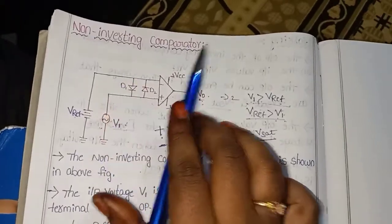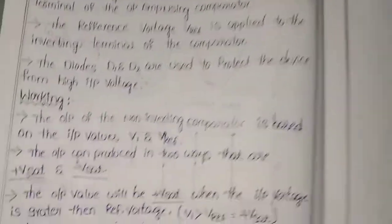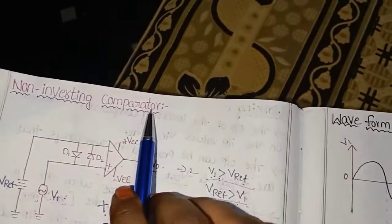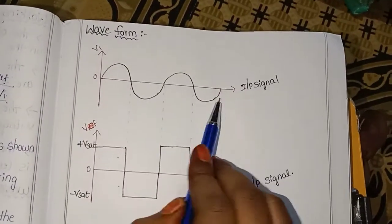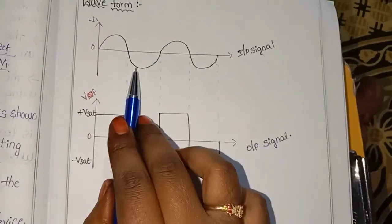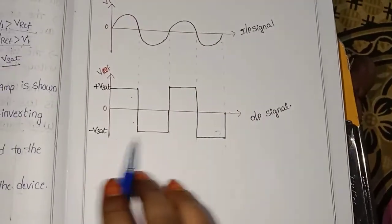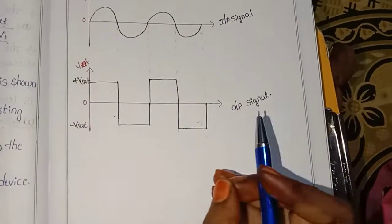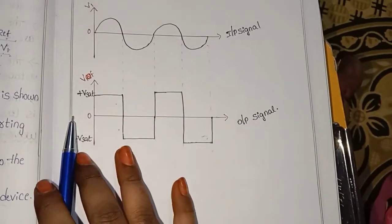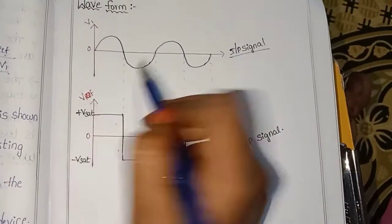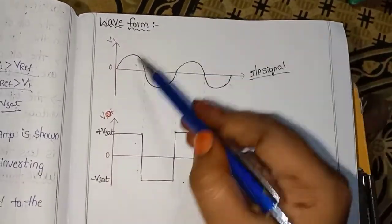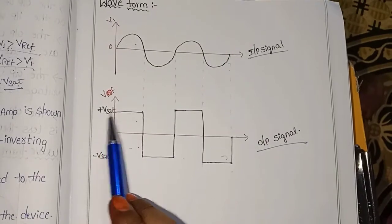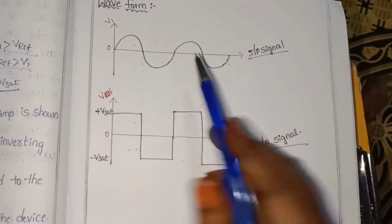This is how the non-inverting comparator works. Now let's look at the waveform. The input signal is a sine waveform and the output signal is a square waveform. The comparator is a sine-to-square wave converter. During the positive half cycle of the input, the output is positive. During the negative half cycle, the output is also negative.